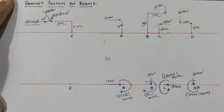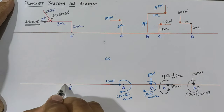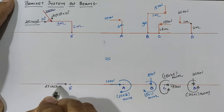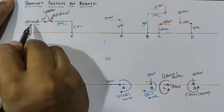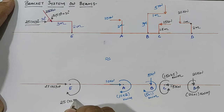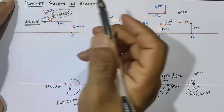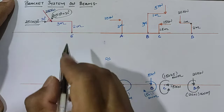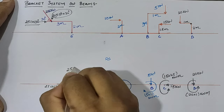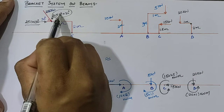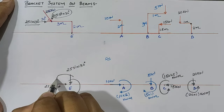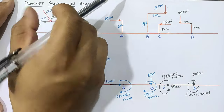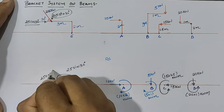The horizontal component 25 cos 30° transfers directly to point E, creating a clockwise moment of 25 cos 30° × 2 at point E. The vertical component 25 sin 30° also transfers directly to point E, and creates an anti-clockwise moment at the column head with value 25 sin 30° × 3, which transfers to point E as an anti-clockwise moment.